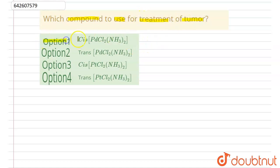Option 1: Cis-PdCl2(NH3)2. Option 2: Trans-Palladium-Cl2(NH3)2. Option 3: Cis-Platinum-Cl2(NH3)2. Option 4: Trans-Pt-Cl2(NH3)2.